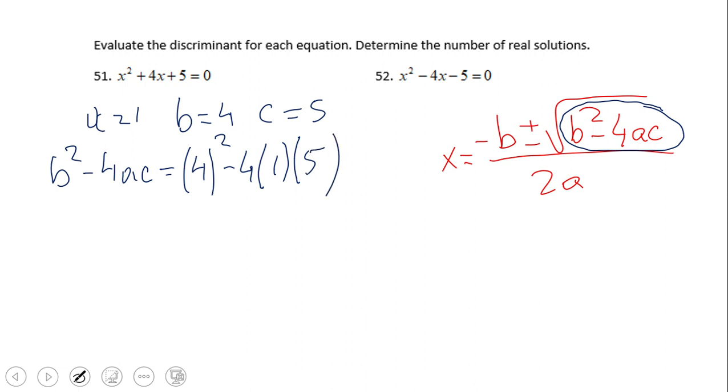Okay, so let's evaluate this. 4 squared is 16, minus 4 times 1, 4 times 5, 20. So this discriminant is negative 4.